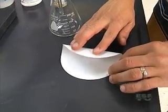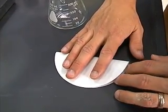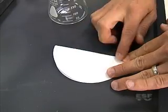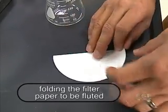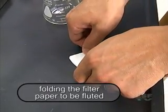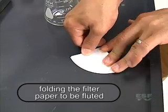So to fold the filter paper I'm going to first fold it in half into a semicircle and form a crease, and then turn it and fold it one more time into quarters. So now I have a cone.